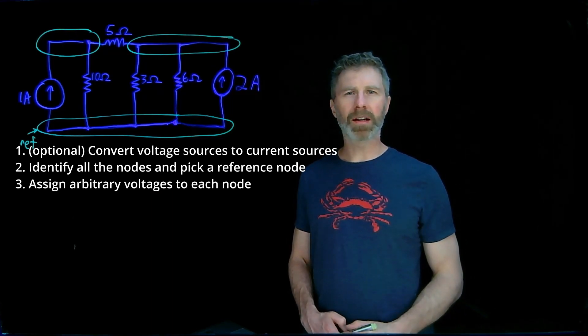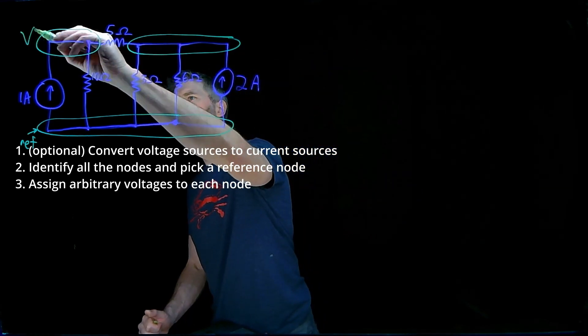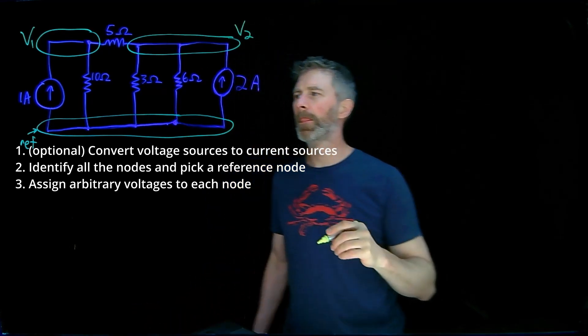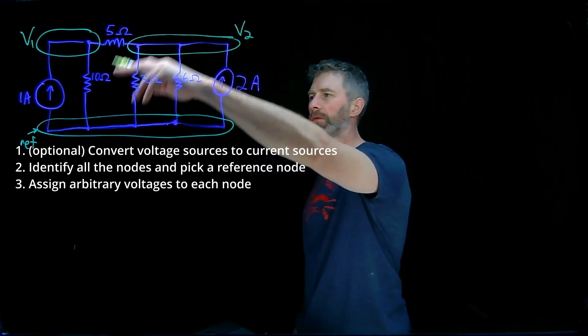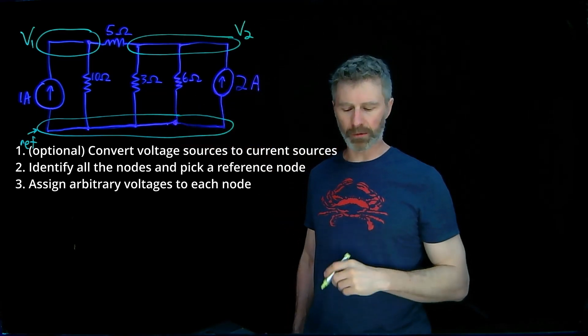We have two other nodes measured in reference to it. Third, we'll assign arbitrary voltages to each one of the nodes. This one we'll call V1, and this one we'll call V2. V1 is with respect to the reference, and V2 is also with respect to the same reference.